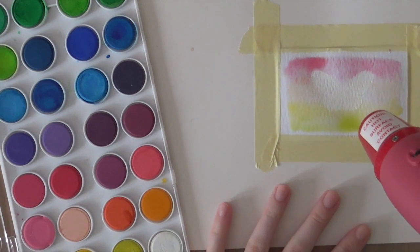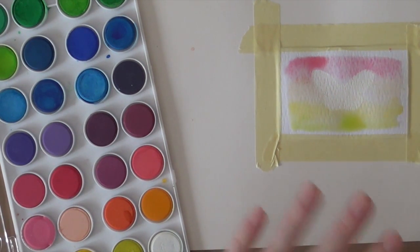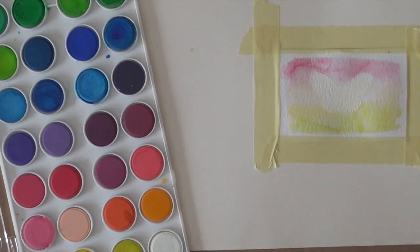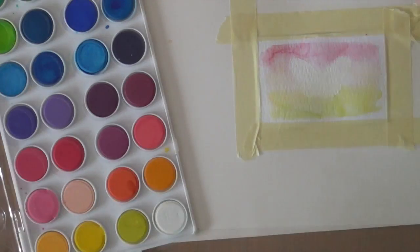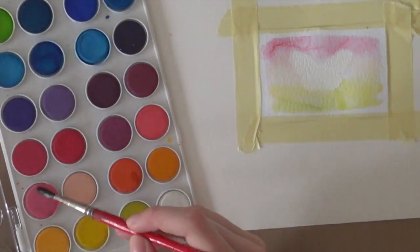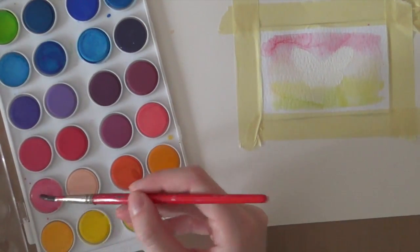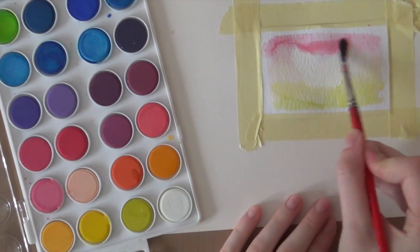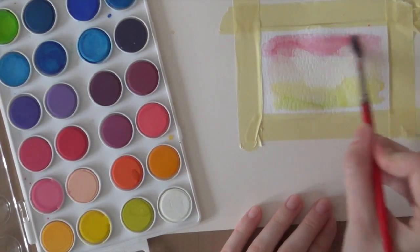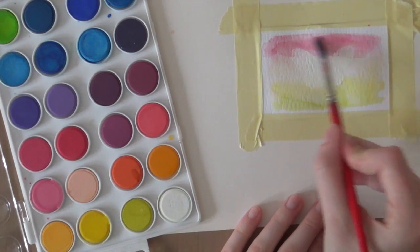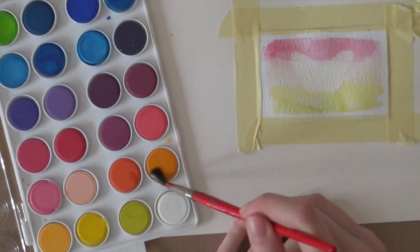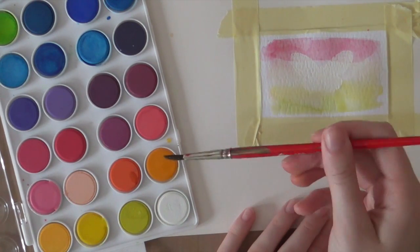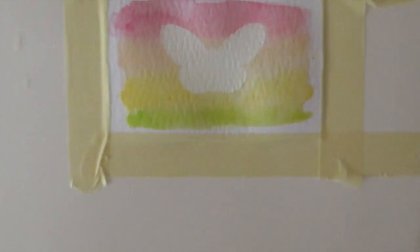So now I'm just going to heat set this with my heat gun so I can add the second layer. So now I'm going to add the second layer of color because I just want it to be a little bit more brighter. I'm going to add some more pink. And this is just a really beautiful pink. So I'm just going to add it over here. And then some orange. So now I'm just going to let this air dry.